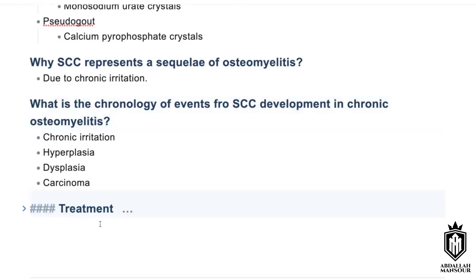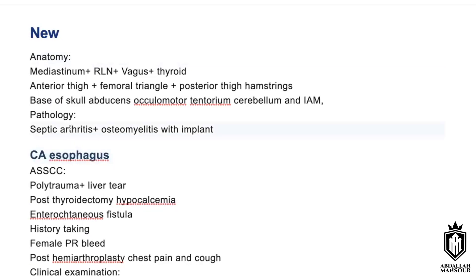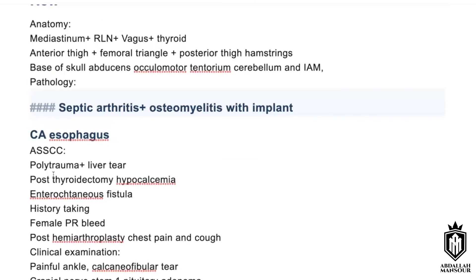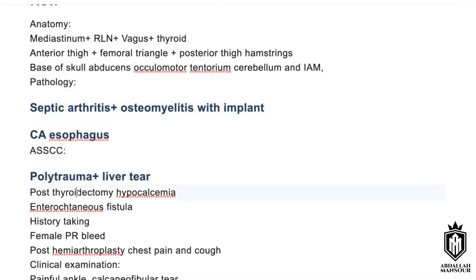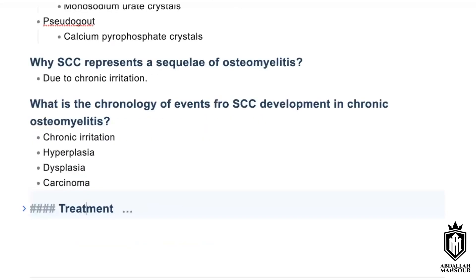Treatment options for osteomyelitis: the patient should receive antibiotics according to trust policy and advice from a microbiologist — mostly cephalosporin and co-amoxiclav. Supportive treatment includes analgesia, hydration, splinting, and elevation of the limb. If the patient is not responding to antibiotic treatment after two days, they should proceed to drainage and irrigation of the osteomyelitis focus.